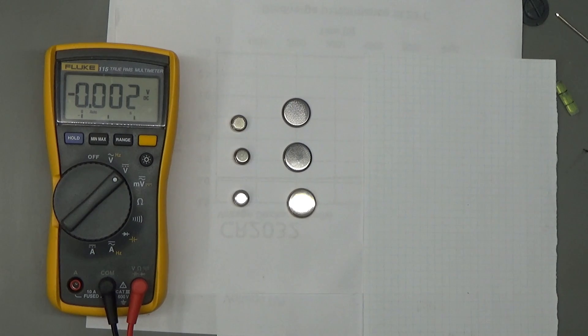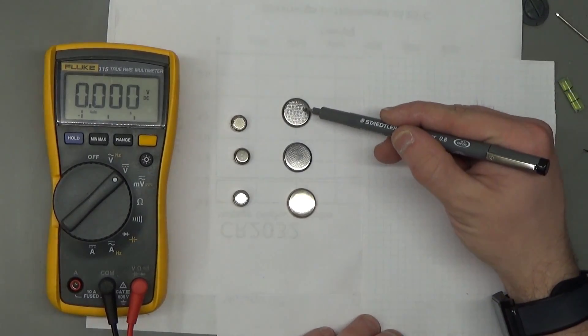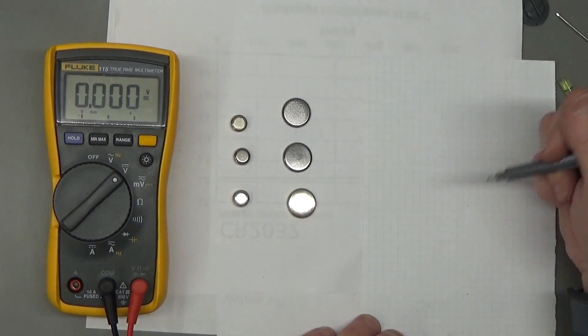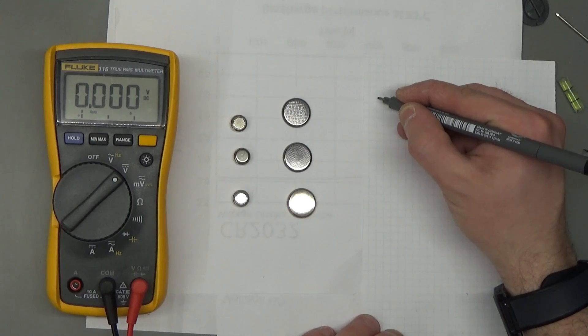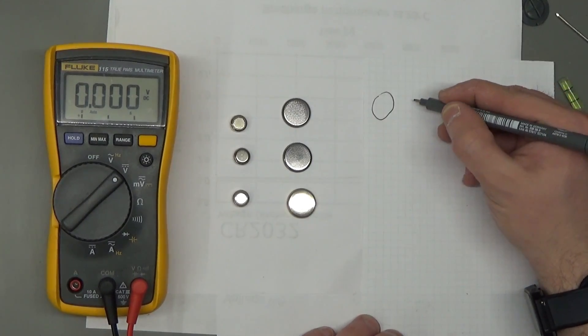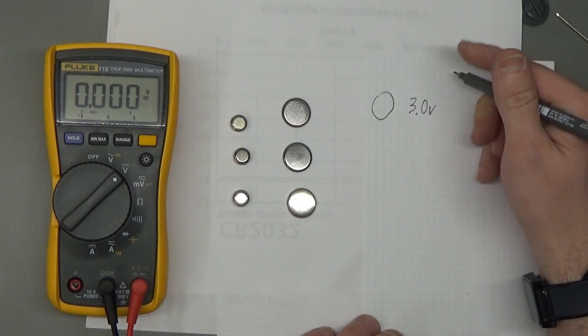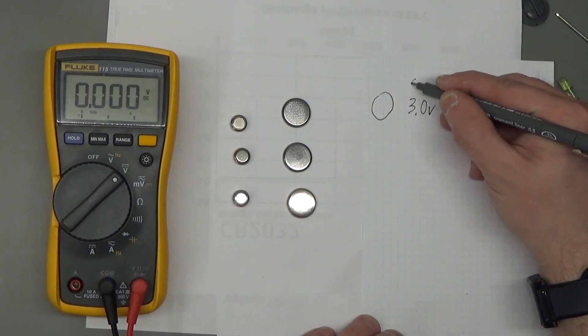You can apply a general rule that if the battery is in the shape of a coin—if your battery looks like this one here, or this one, or this one—you can just assume that it is going to have 3.0 volts if good.